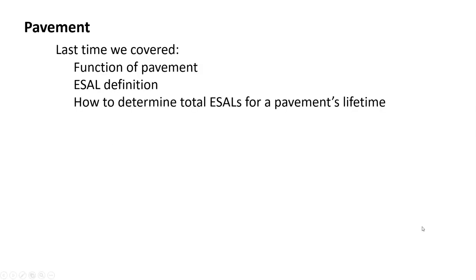Last time we looked at what the function of pavement was — why do we even use pavement, what is it really doing, what's its role. We talked about how to define an ESAL and went through an example showing an individual truck. Then we looked at how you're not going to determine ESALs for individual trucks — you're going to use an average value and work that into the total ESALs the pavement will see over its lifetime.